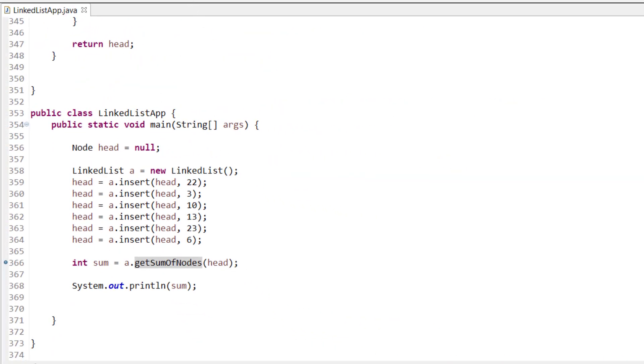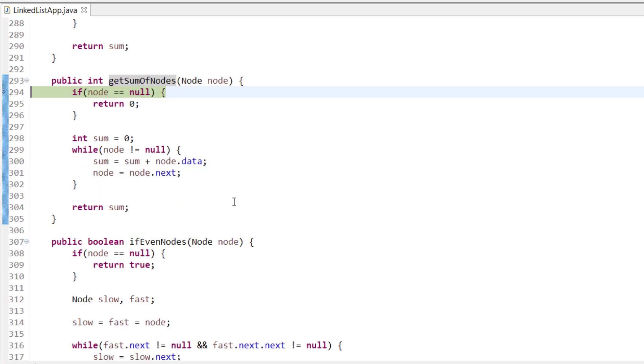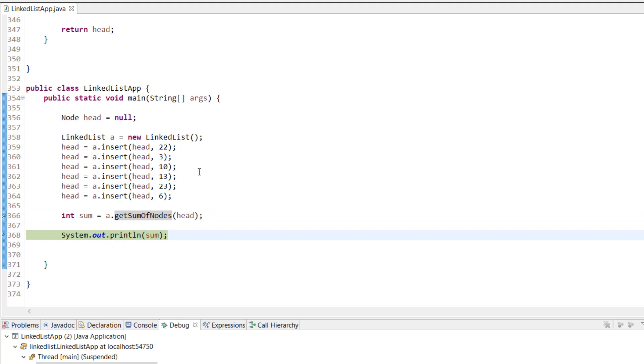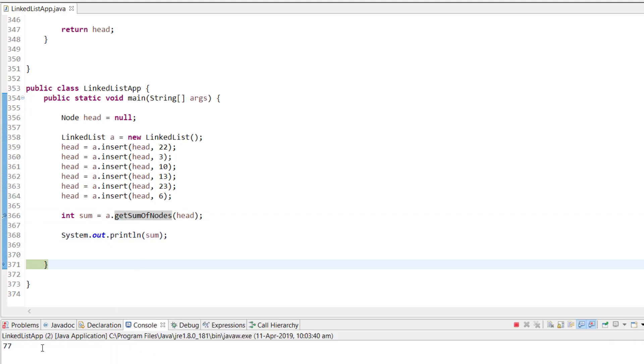Let me show you through debug mode whether we're doing it correctly. It will check the node is not null, initialize the sum variable, keep adding the value to the sum variable, and when the node is null, it will return the sum. If you print the sum, it will give you the answer 77.